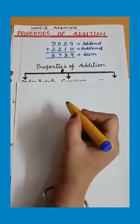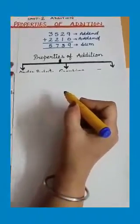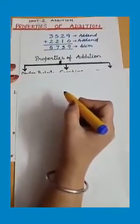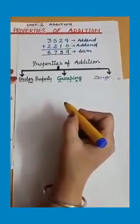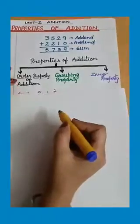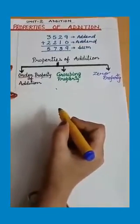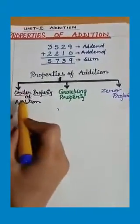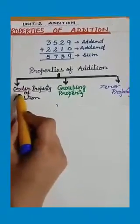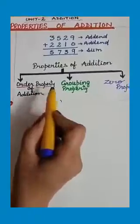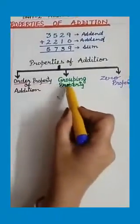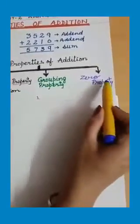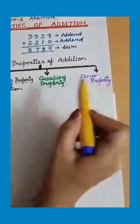Now let us know about the properties of addition. There are three properties of addition. Number 1: order property. Number 2: grouping property. Number 3: zero property.